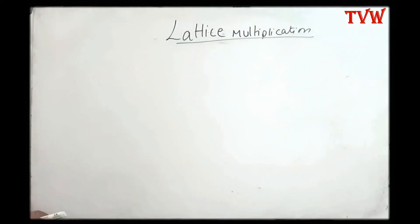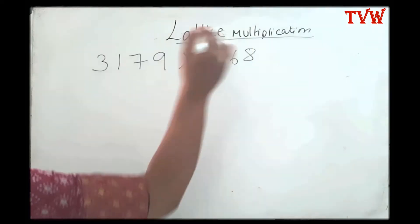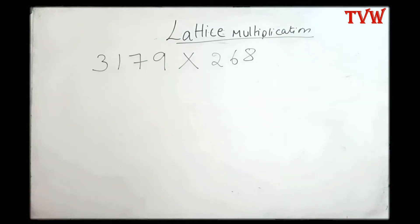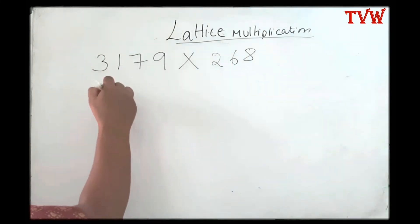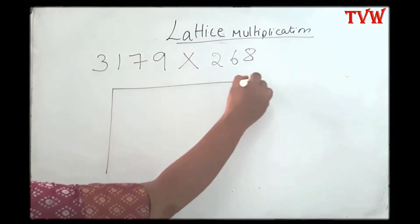Welcome to the virtual whiteboard. In the previous video you would have seen lattice multiplication for a three-digit number into a two-digit number. Now let us multiply a four-digit number into a three-digit number. We would need four columns and three rows.